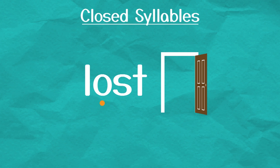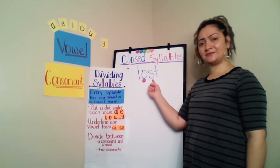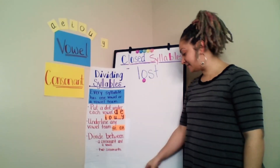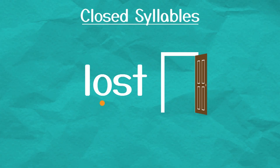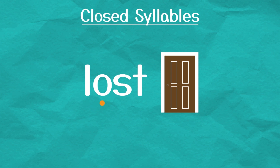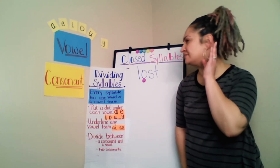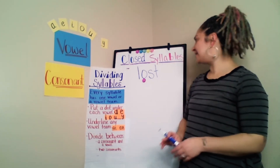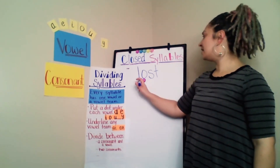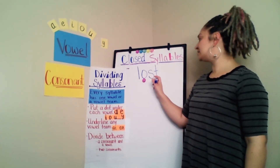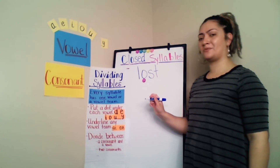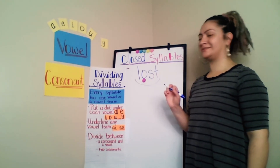Let's look at the vowel. Is there a consonant after the vowel? Yes. That means that the door is closed — that's a closed syllable. That O is going to say the short O sound. So we have L-O-S-T. What word? Lost.